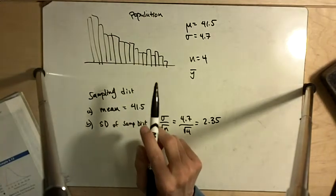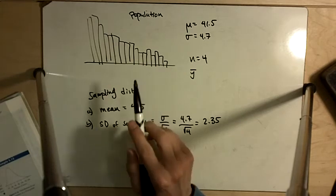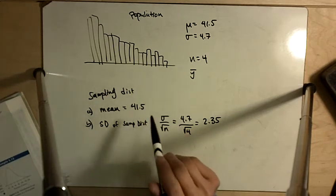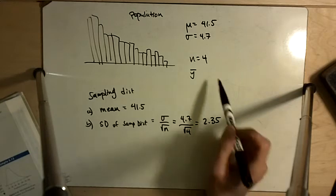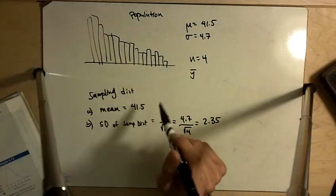Once you get n bigger than, I don't know, 15, 30 or whatever, then the sampling distribution will almost always be a normal distribution. But at size n equal to 4 and having a skewed distribution as the parent population, we can't say the sampling distribution will have a normal distribution.